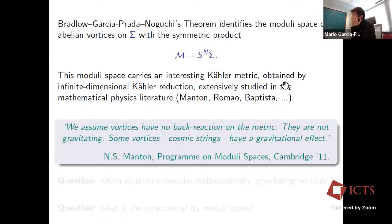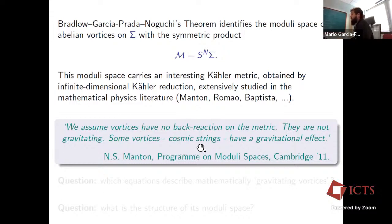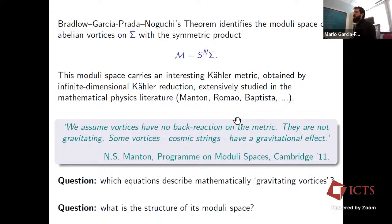In 2011, I was attending a program on moduli spaces in Cambridge, and I attended a lecture by Nick Manton. He mentioned he was going to assume all over his talk that the vortices had no back-reaction on the metric — meaning no gravitational effects. But he also mentioned that some vortices, called cosmic strings, do have a gravitational effect. At the time I was a young postdoc, and together with my former supervisors Garcia-Prada and Álvarez-Cónsul, we thought we could gain some insight on the right notion of gravity in vortices mathematically.